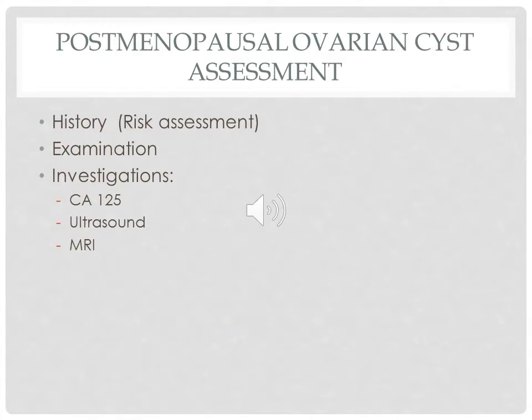We will start with management in postmenopausal women. The first step in management is assessment, which has three main components: history, examination, and investigation. Our aim from history is to identify any risk factors which increase the risk for the woman of developing ovarian cancer, and to identify any acute condition requiring urgent intervention — such as complications like torsion, hemorrhage, or rupture, which can present with acute abdominal pain.